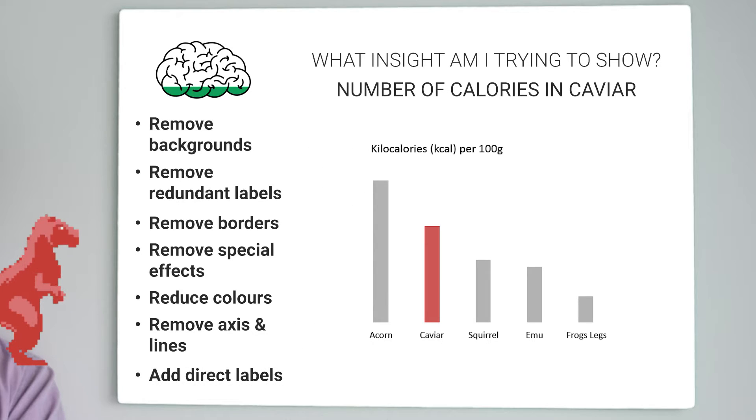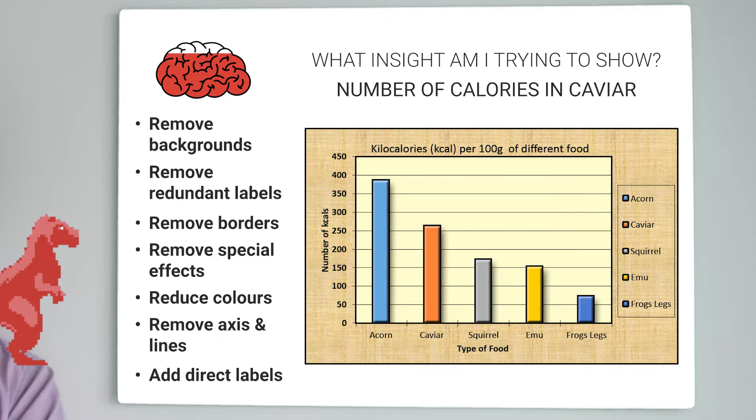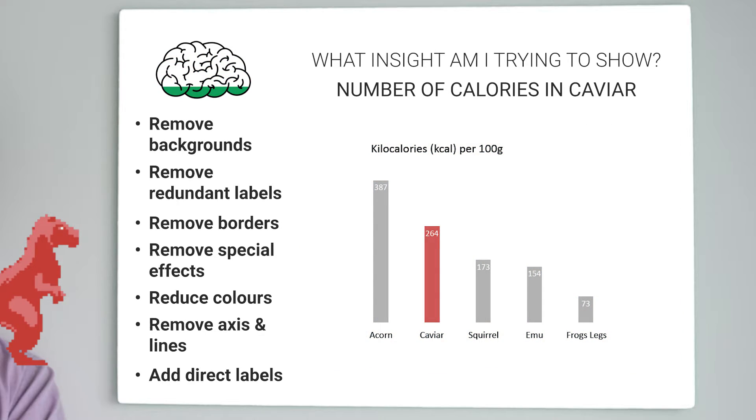And whilst we're at it, why don't we put the values directly onto the bars? And there we go. Compare this chart to the old one and it's infinitely better. You've reduced the brain drain. Your audience will focus on what you have to say. And most importantly,